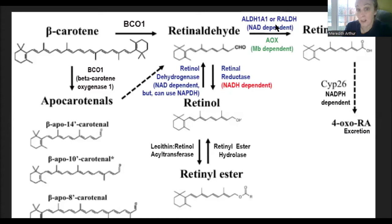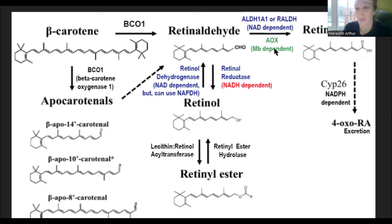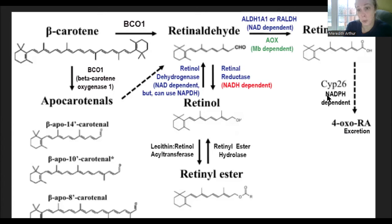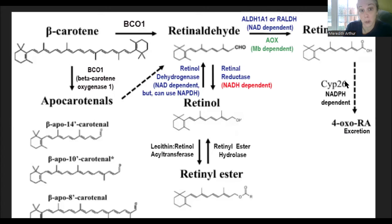Retinol aldehyde is converted into retinoic acid by ALDH1A1 (retinol aldehyde dehydrogenase), which is NAD dependent. There's a backup enzyme for when NAD levels aren't available: AOX, which is molybdenum dependent. Retinoic acid is then metabolized away by CYP26, which requires NADPH. NADPH is recycled in energy production and also made by the pentose phosphate shunt pathway, which is thiamine dependent. CYP26 is also an iron enzyme containing heme, so if you're iron deficient or bad at making heme, you might struggle with CYP enzymes and accumulate retinoic acid.